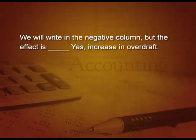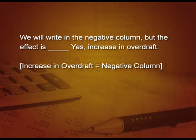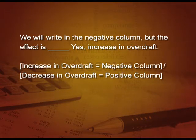So when we have to increase the overdraft, we will write it in the negative column and the effect is it increases the overdraft, because in the minus column, if you write more minus, it will increase the minus — that is overdraft. So the logic is: increase in overdraft equals negative column, and decrease in overdraft equals positive column. I am feeling the need to do one question. Let us begin.